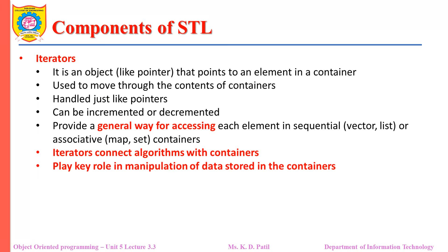The third component of STL is iterators. An iterator is an object such as a pointer that points to an element in the container. Algorithms use these iterators, i.e. pointers, to point to elements so that the data can be manipulated. The iterators are used to move through the contents of the containers and are handled just like pointers. Iterators can be incremented or decremented and provide a general way of accessing each element in sequential or associative containers.